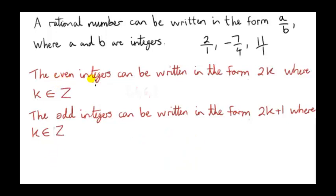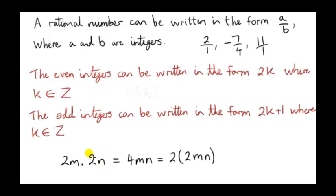Now we know that if we multiply two even integers together, we get an even integer. For example, if we multiply 6 by 4, we get 24, which is an even integer. More generally, an even integer has the form 2k. So we could take an even integer, which is 2 times some integer m, and multiply it by a different — or maybe the same — even integer, which we could write as 2 times n.